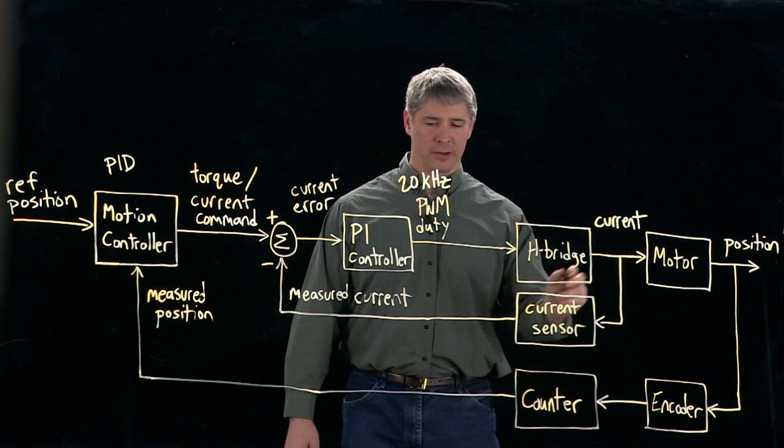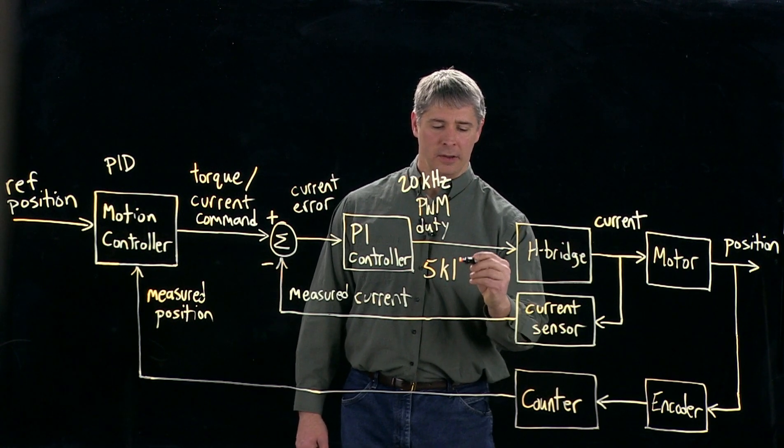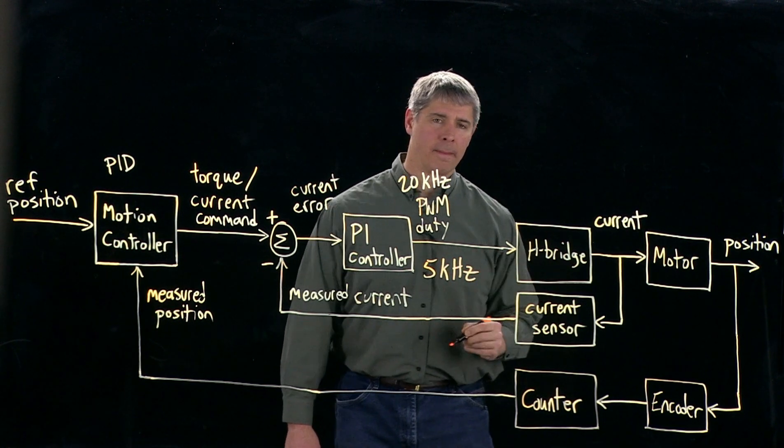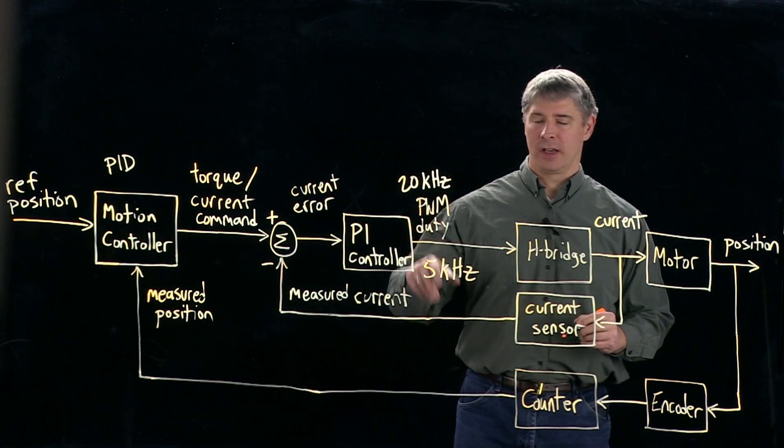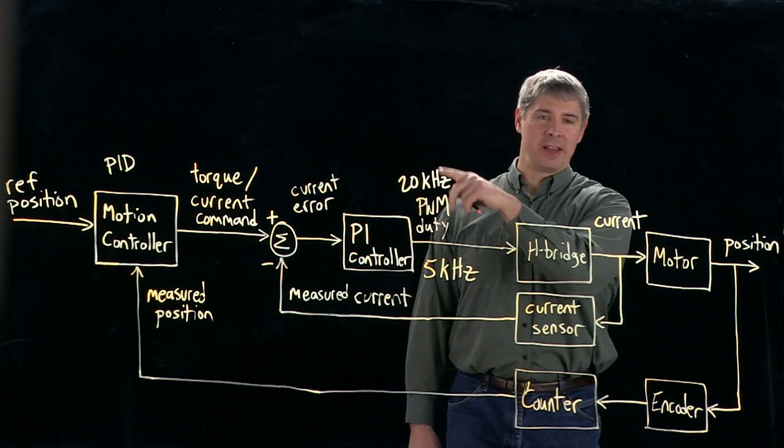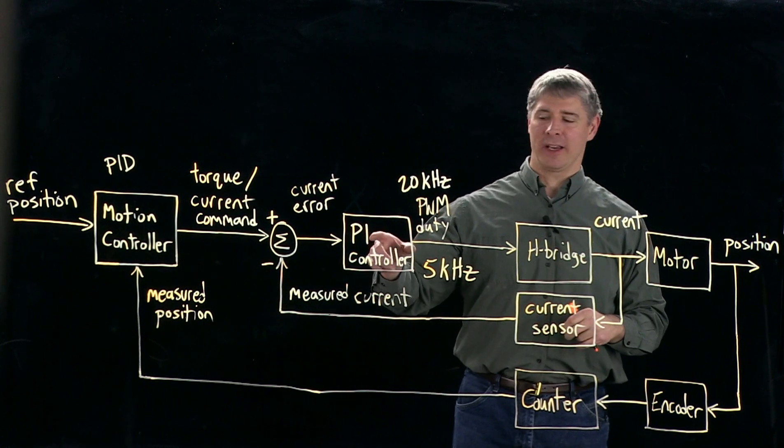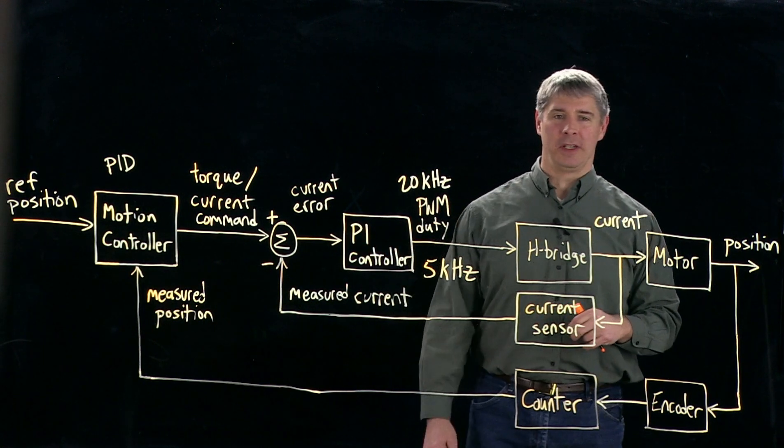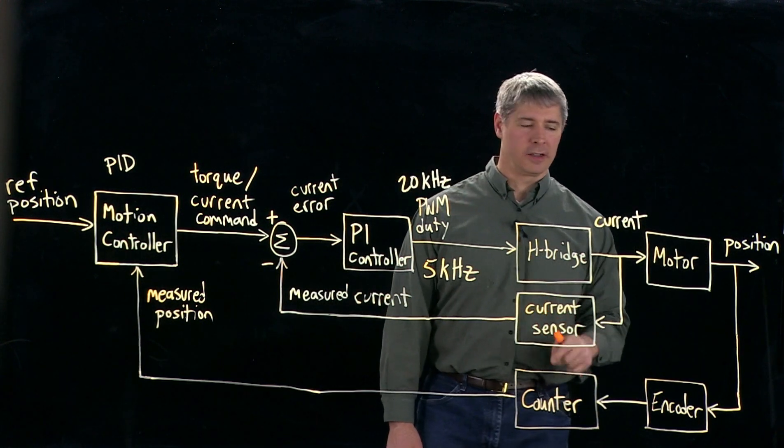So for example, this inner loop here could be running at five kilohertz. So that means, since our PWM is at 20 kilohertz, that means we have the same PWM duty cycle for four periods, then we recalculate the PI controller, and then we update the PWM duty cycle. So this inner loop is trying to control the current at five kilohertz.